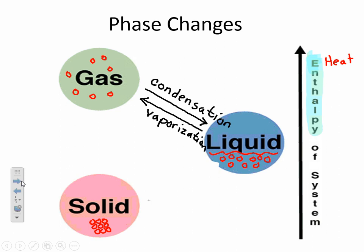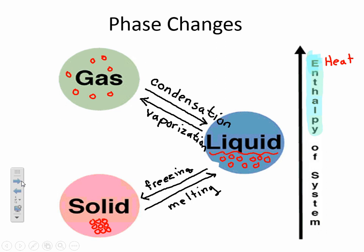When a liquid becomes a solid, this one you probably know — it's freezing. And when a solid becomes a liquid, it's melting. Notice that as it becomes a liquid, its enthalpy increases. That means the heat in the system, the heat that the molecules have, increases, so they're free to move around.